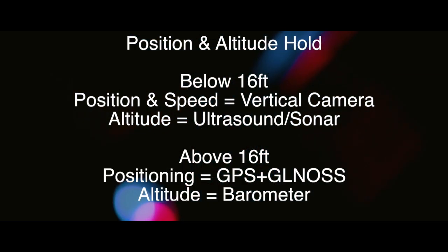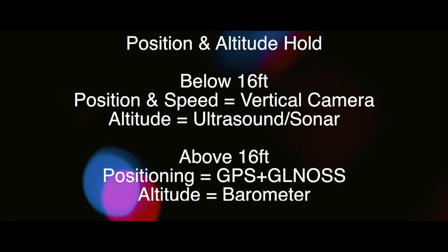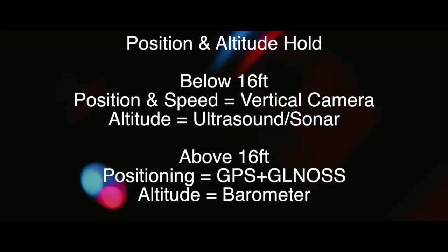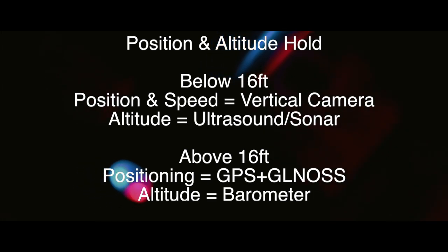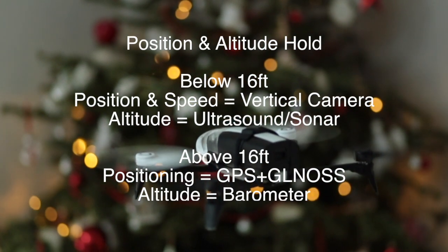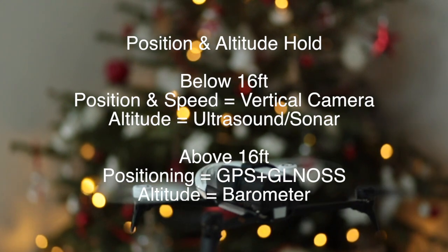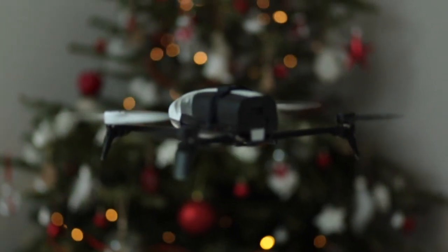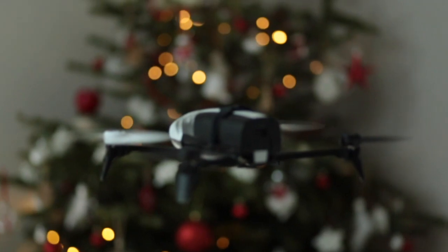Because the low altitude positioning and height system has its limitations above 16 feet or above 4.87 meters, the system is switched and it uses the GPS module with the GLONASS system on it, with a barometer mounted to the front of the system, sensing air pressure, and this determines the altitude above 16 feet or 4.87 meters.